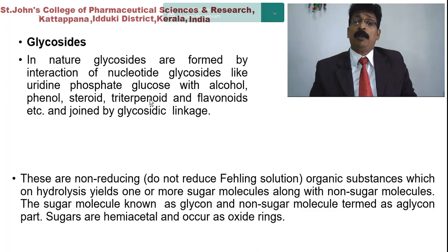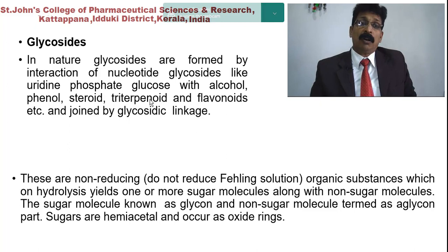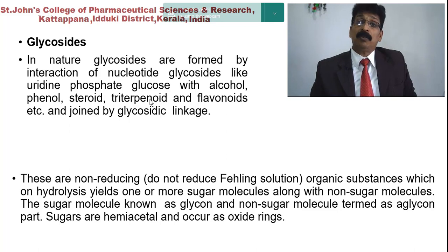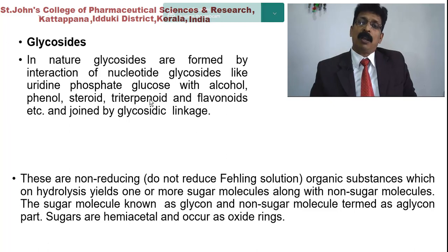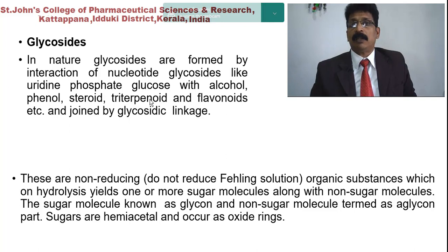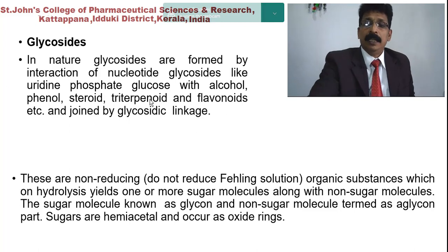Glycosides are formed by interaction of nucleotide glycosides like uridine diphosphate glucose with alcohols, phenols, steroids, triterpenoids, and flavonoids, joined by a glucosidic linkage. These are non-reducing — they do not reduce Fehling's solution, which gives brick red color in the carbohydrate test. On hydrolysis, they yield one or more sugar molecules along with non-sugar molecules. The sugar portion is known as the glycon and the non-sugar portion as the aglycon.